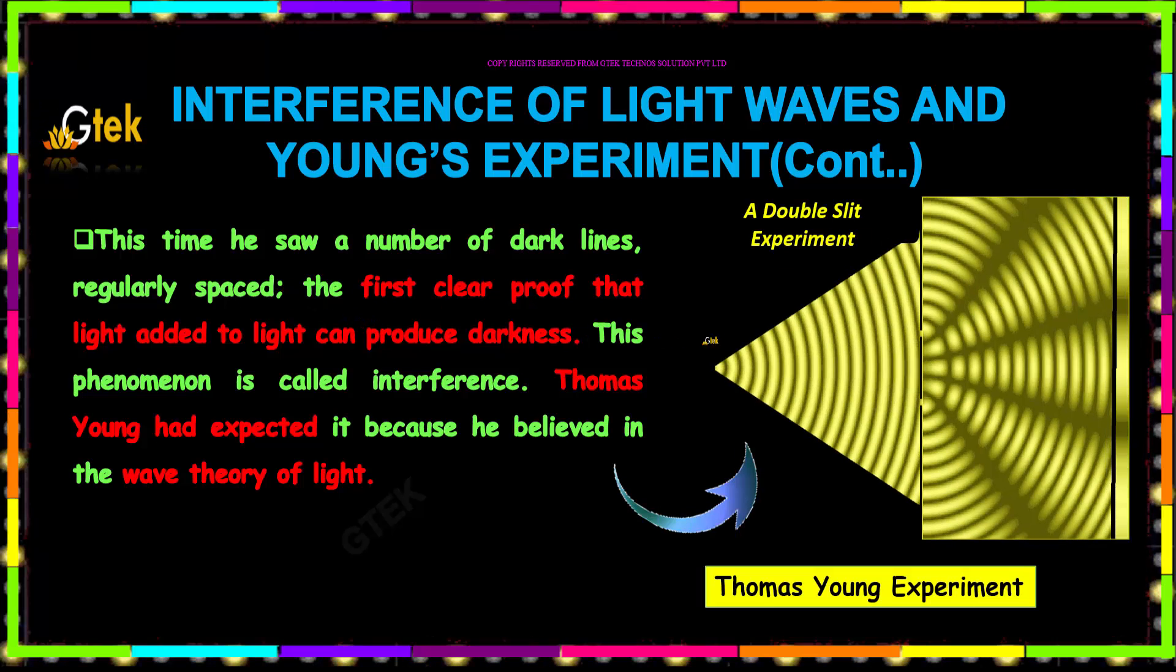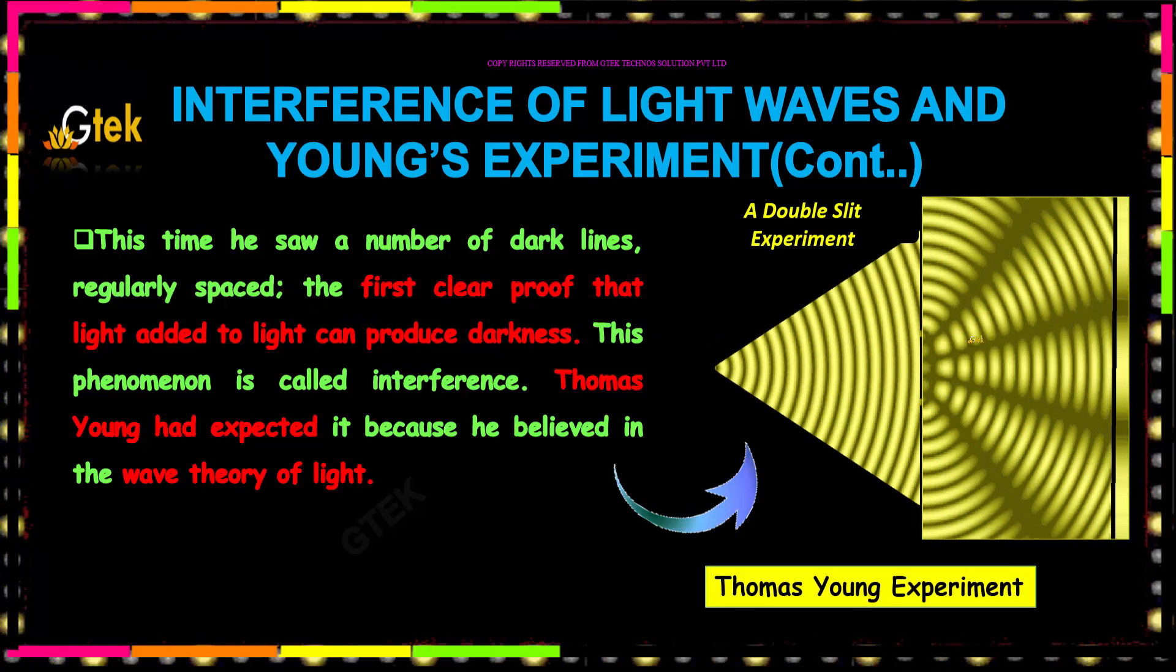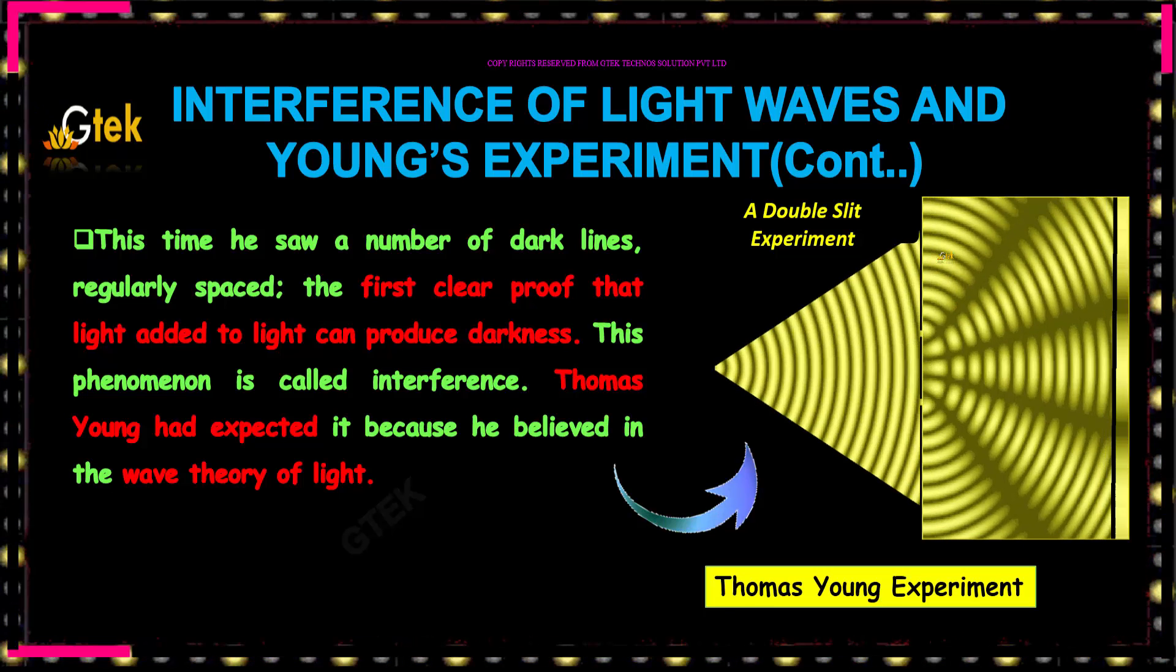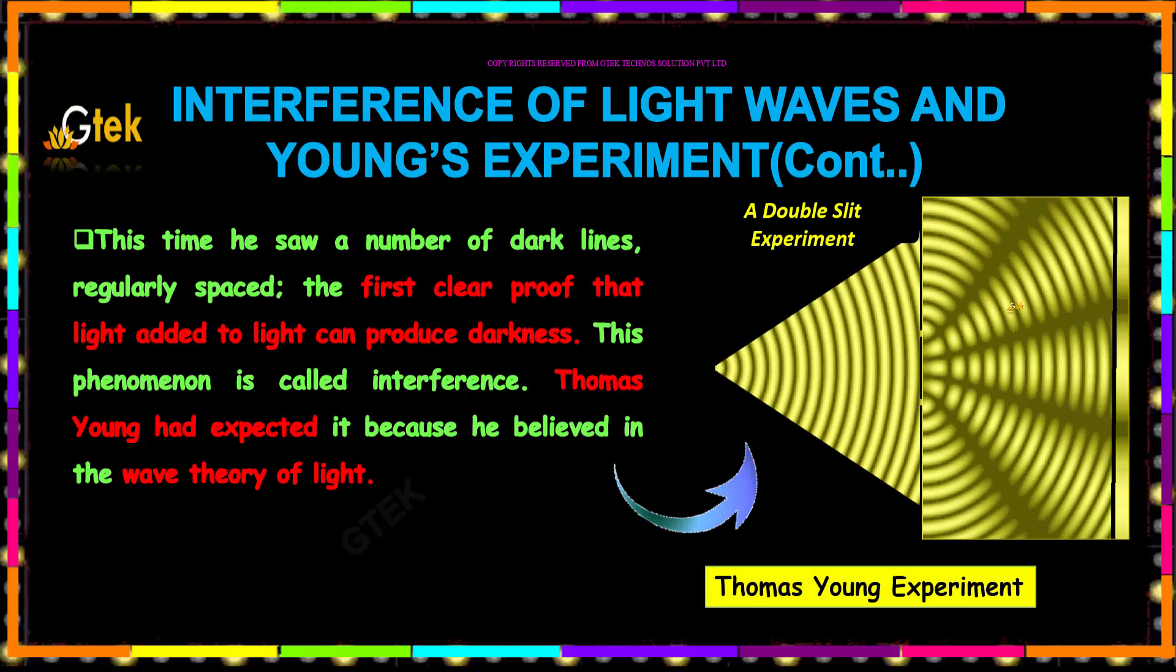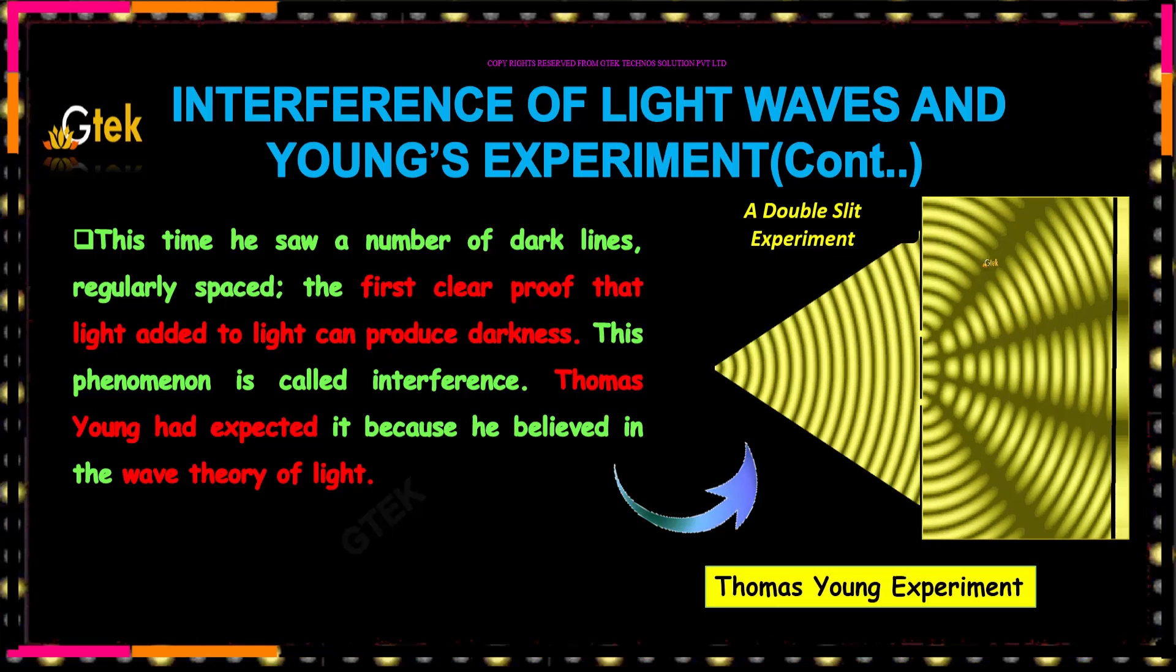This time he saw a number of dark lines regularly spaced. The first clear proof that light added to light can produce darkness.